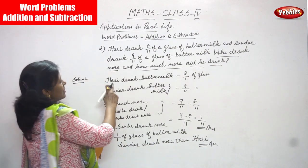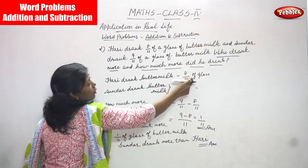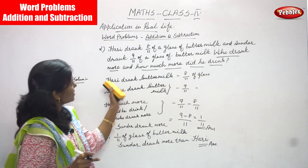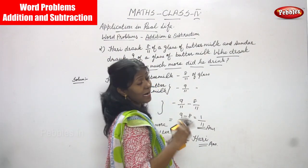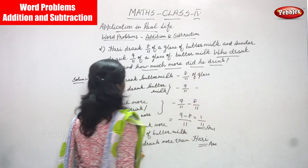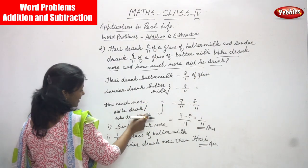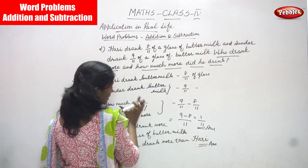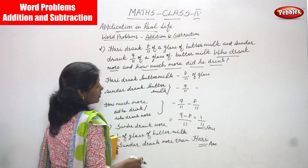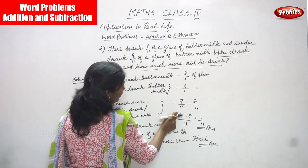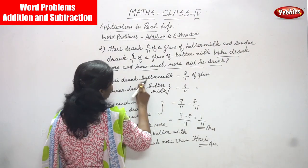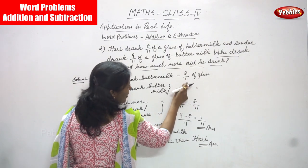Let me repeat once again. Hari drank buttermilk — eight by eleven of a glass, and Sundar drank buttermilk — nine by eleven of a glass. They asked two questions: first, who drank more; second, how much more did he drink. This is a subtraction because the clue word is 'how much more'.